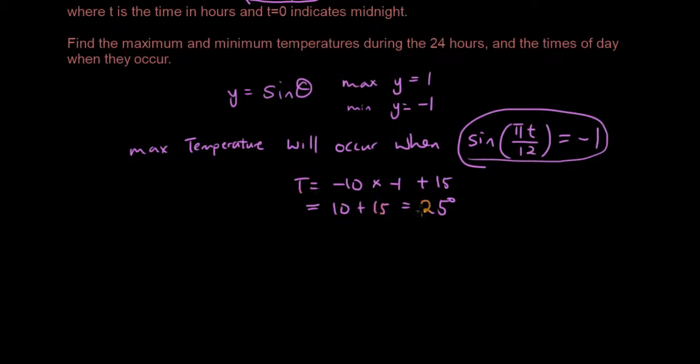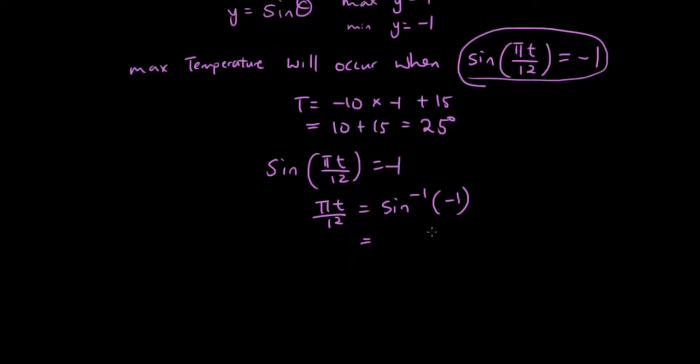Now if the highest temperature is 25 degrees, and this happens when sine θ equals negative 1, this means that we can then use that to work out what t is. So then we're going to inverse sine negative 1. Now when you inverse sine negative 1, what do you get? You need to draw the unit circle or you can draw the sine wave, whichever one works better for you.